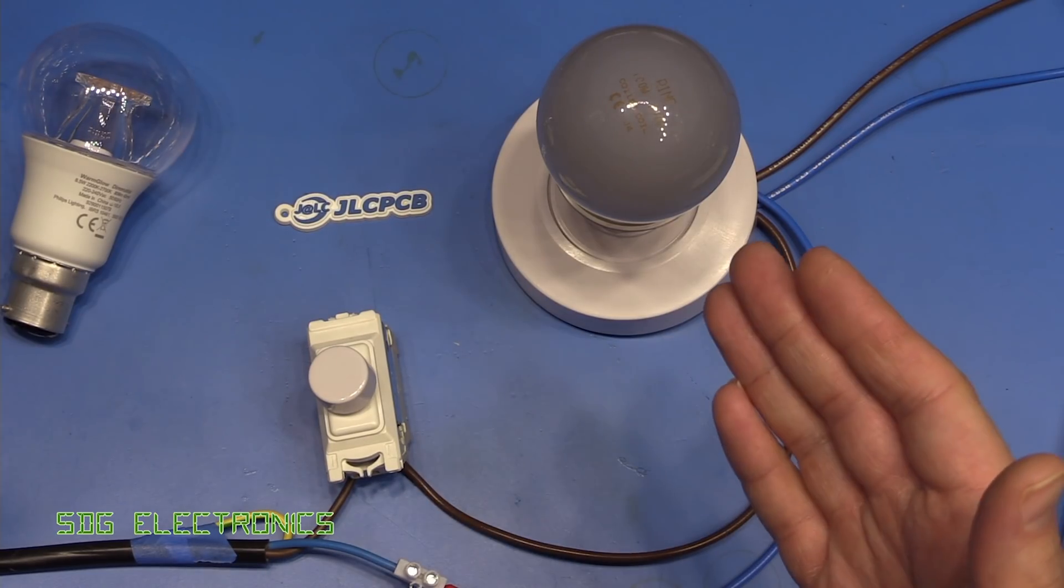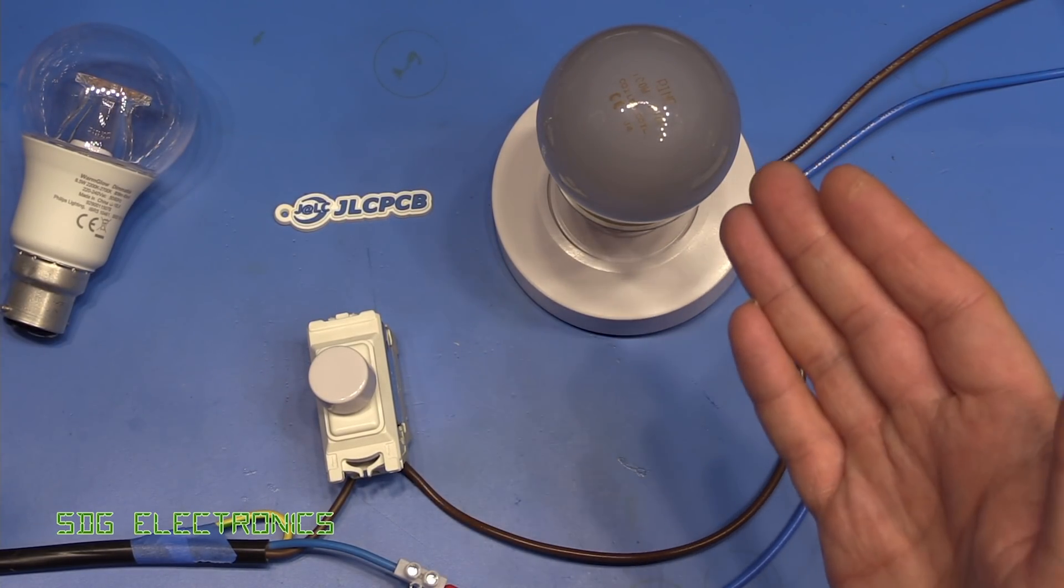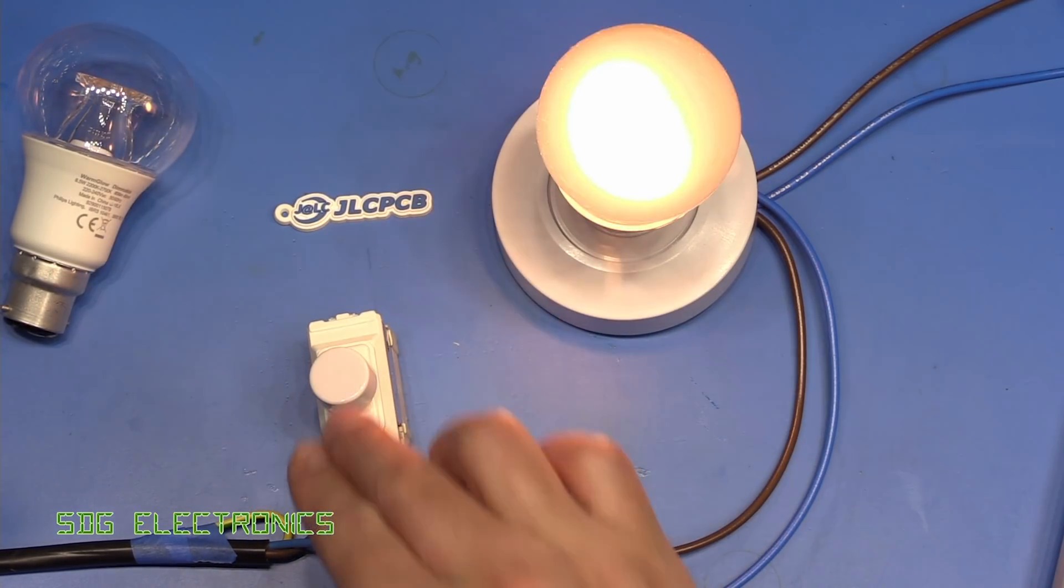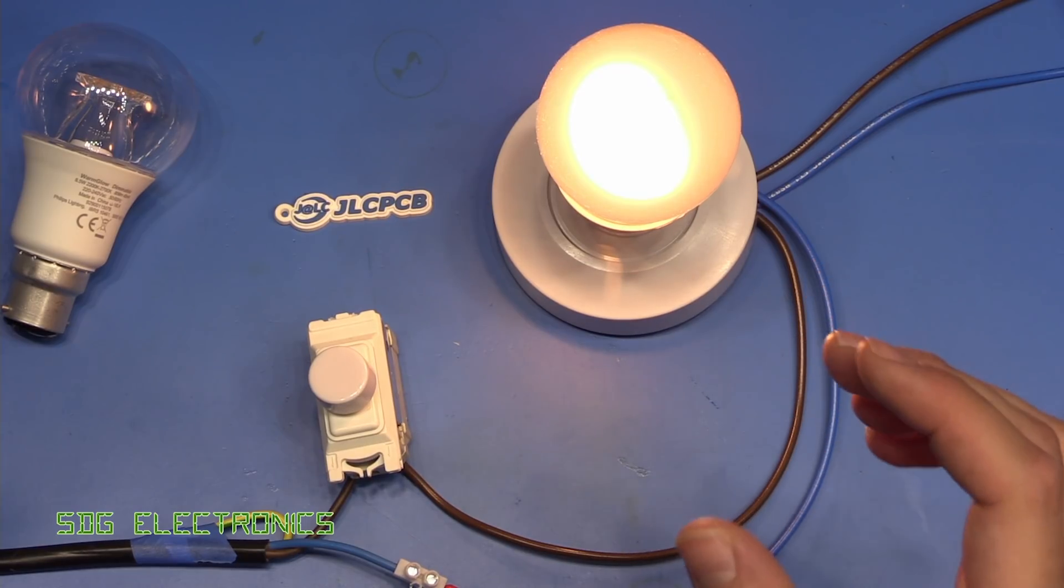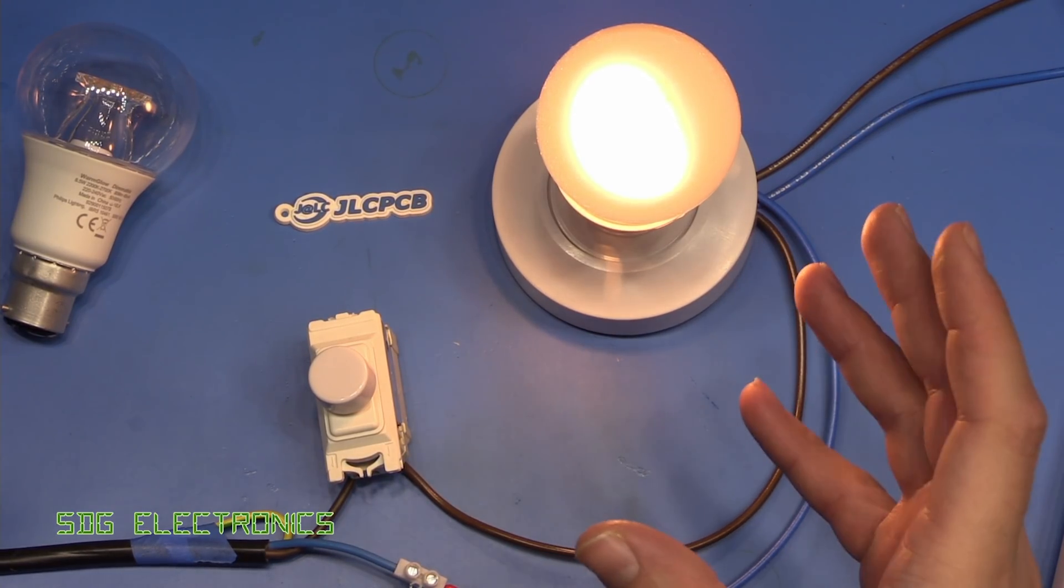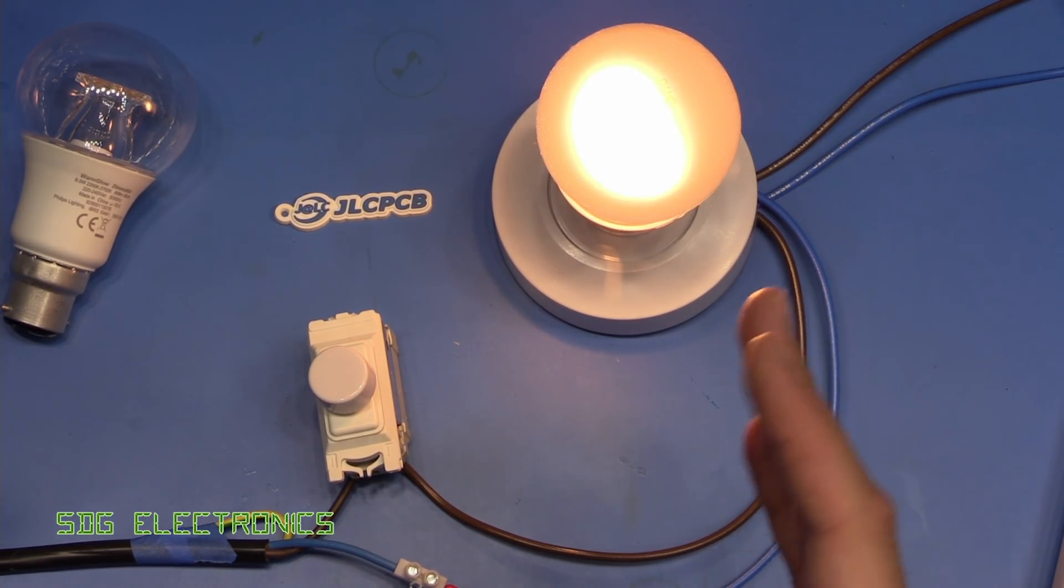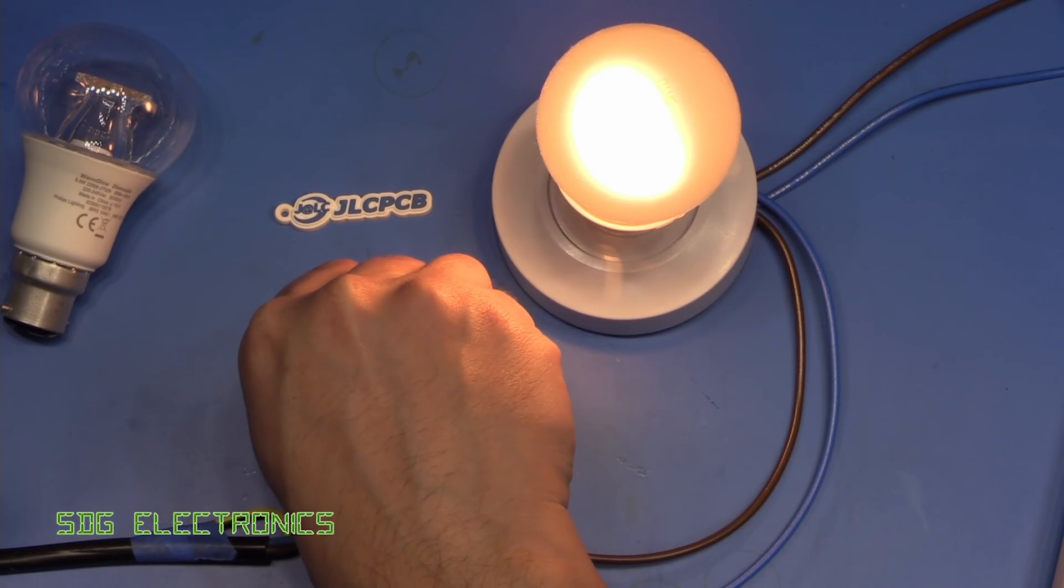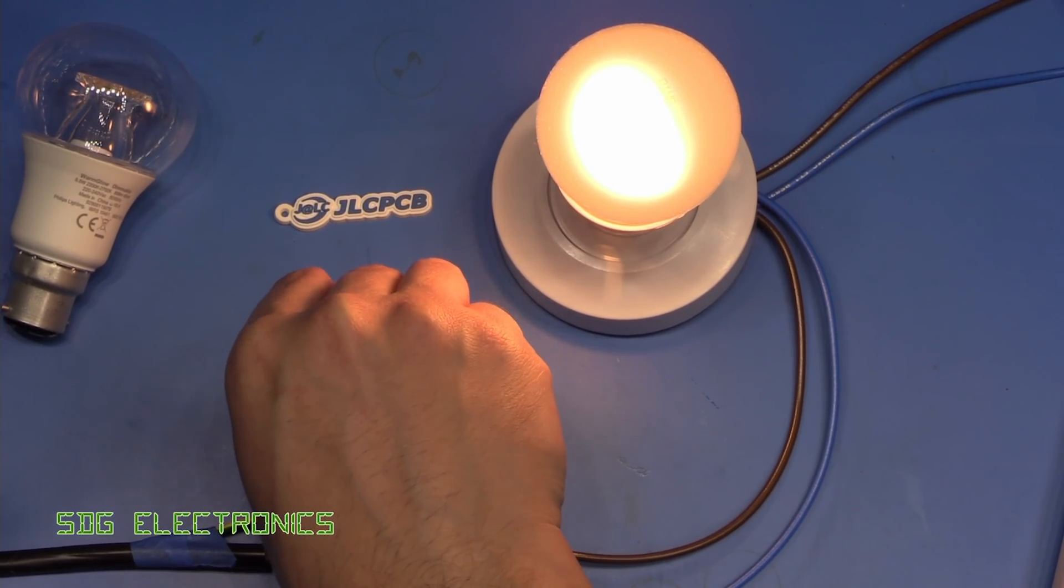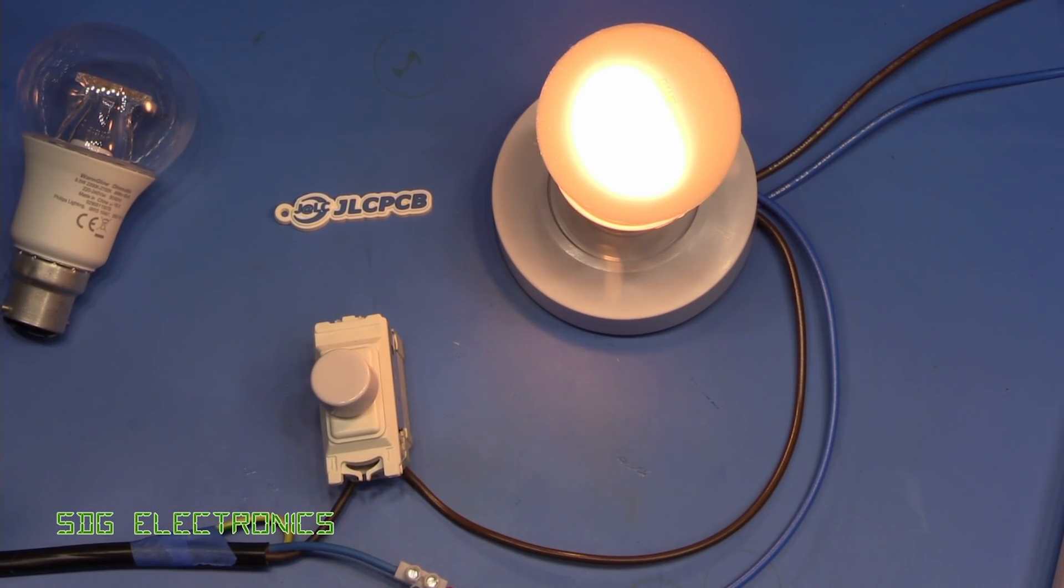So we've got the dimmer switch connected up to an incandescent lamp, and when we turn it on, it does illuminate, but to the human eye, it is actually flickering. It looks like it's lost half of the sine wave, but we get no change in brightness really, no matter what we do with the knob.